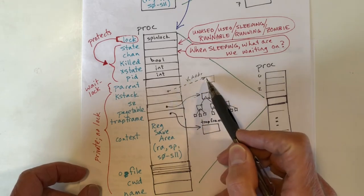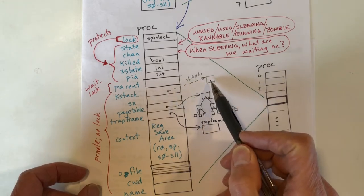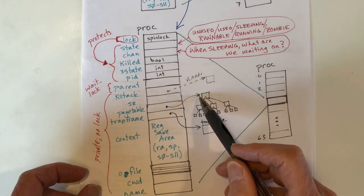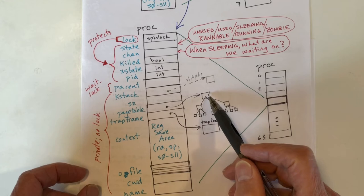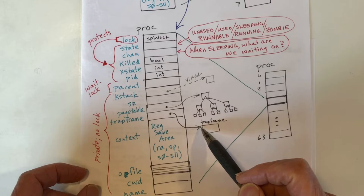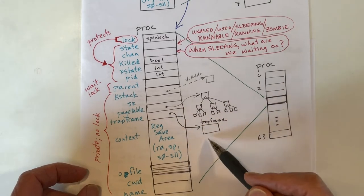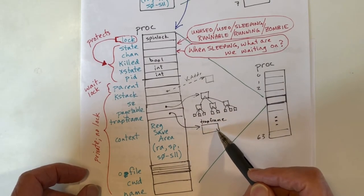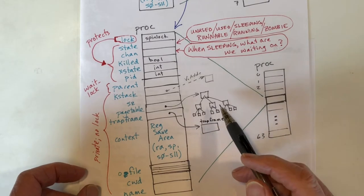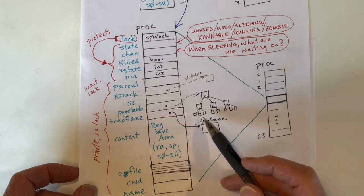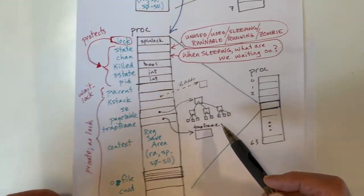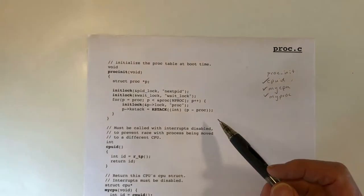The kstack field is a virtual address, indicated by the dashed line. By contrast, the page table pointer points to a physical address somewhere in physical memory, as does the trap frame pointer, which points to the actual physical address of the trap frame. The trap frame will be mapped into the second highest page of the virtual address space, but this pointer is to the actual physical page returned from kalloc, and we'll see that happening shortly.